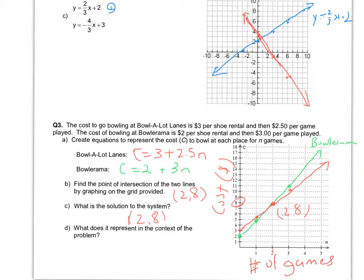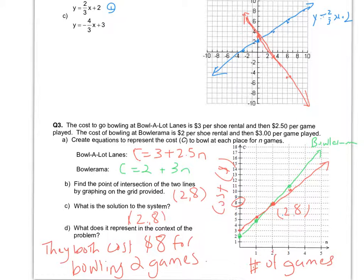so you need to also be able to interpret in context what that point of intersection is actually meaning. So they both cost $8 for bowling 2 games.